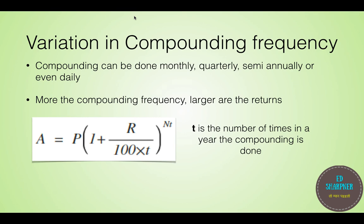So the formula changes to P into 1 plus R by 100T raised to NT, where T is the number of times the compounding is done per year. Also remember, R is always given in percentage per year, if not mentioned otherwise.